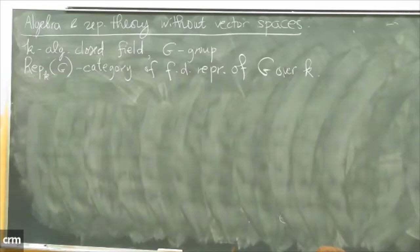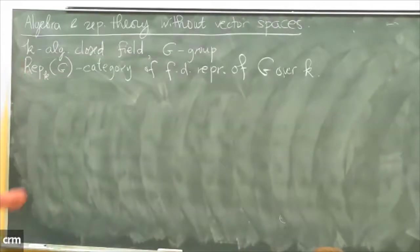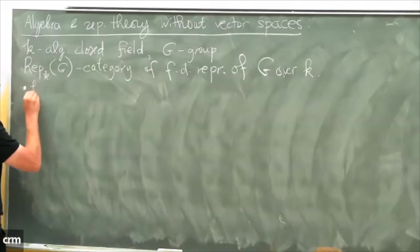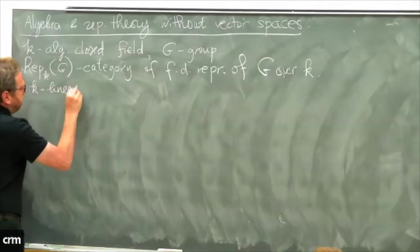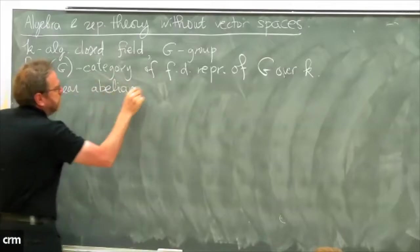Now I want to list some important properties and structures of this category, and then I will forget about this category and just axiomatize those structures. First of all, this category is a k-linear abelian category.